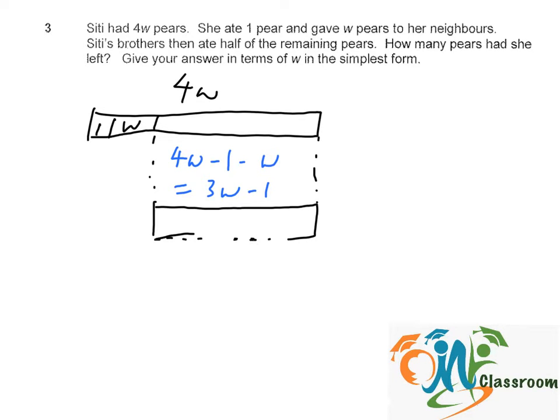This is what she had left and her brothers ate half of it. This amount would be half of three W minus one. Half times three W minus one gives us three W minus one over two.